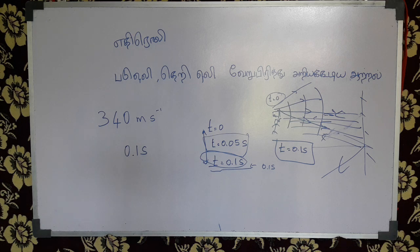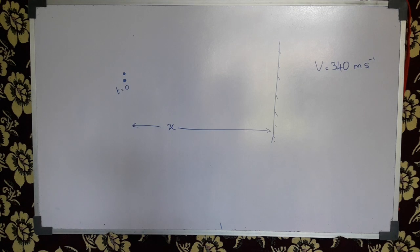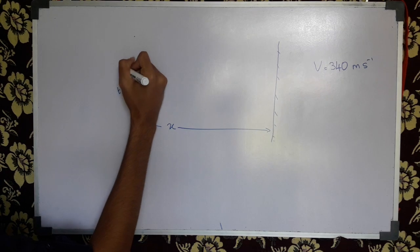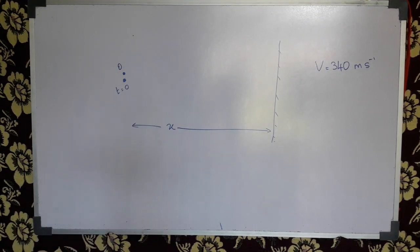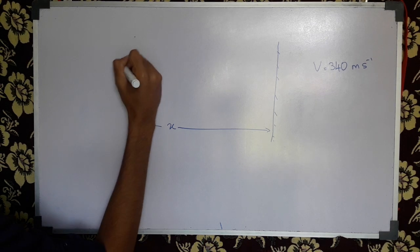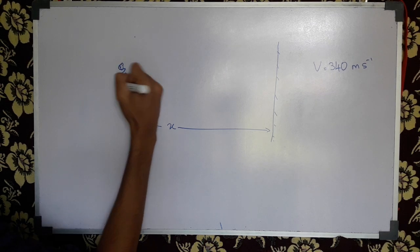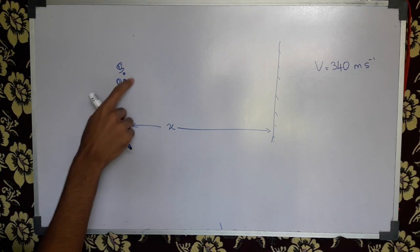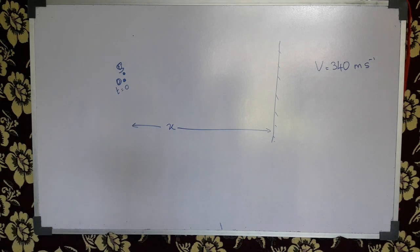When you see the previous morning, you can see the video. Please go to the video. What did you see here? This is an object in the morning. This is an observer experience in the morning. This is an observation. If you see the sound effects in this morning, you can see the text alone.